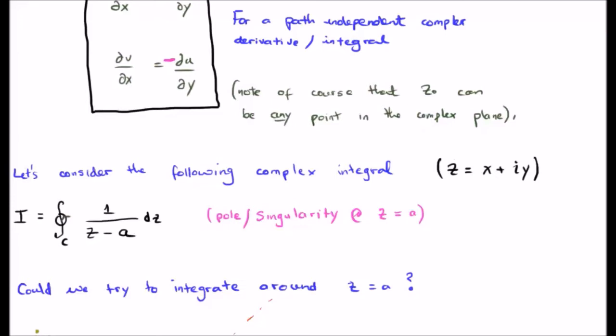Now the point here is that we have a pole at z equals a. So we're not going to get i being equal to zero. The question is, are we able to integrate around the point z equals a? Can we use a circle and see what happens?